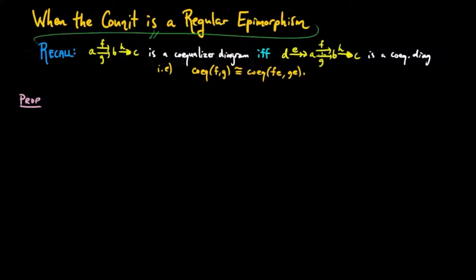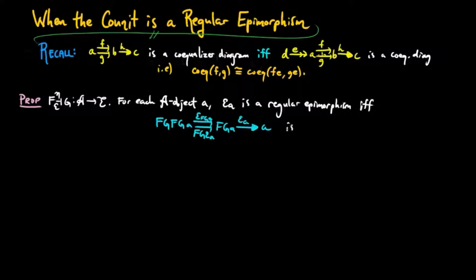The result we prove is: let FG be in an adjoint situation. For each object A, we have epsilon A as a regular epimorphism if and only if epsilon A is a co-equalizer of epsilon FGA and FG epsilon A.